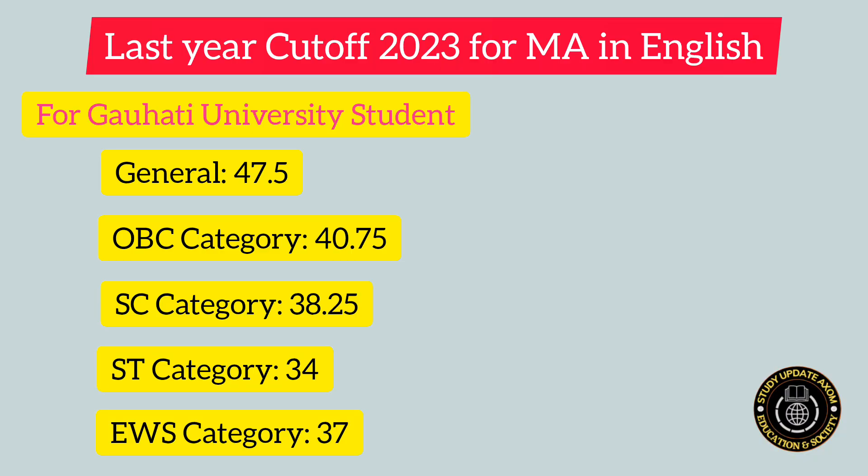First, let us look at the last year cutoff for MA in English under Guwahati University Entrance Exam, for Guwahati University students — meaning those who completed their graduation under Guwahati University itself or any colleges affiliated to it. For General category, the last year cutoff was 47.5. For OVC category it was 40.75.